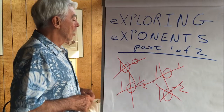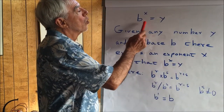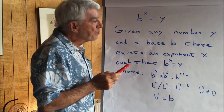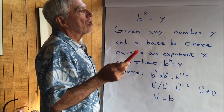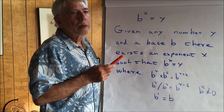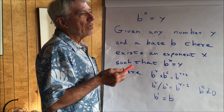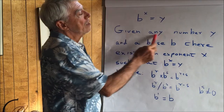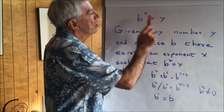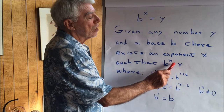Let me give you my definition. It's a little bit more complicated, but it's going to work and it's going to make things simple. Here's an equation: B is the base, x is the exponent, and y is the result. When you're working with exponents, you can only combine exponents that have the same base simply. Given any number y and a base b, there exists an exponent x such that b raised to the x power is equal to y.